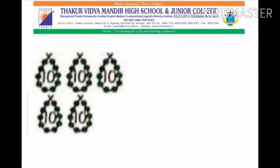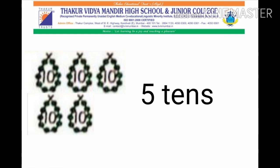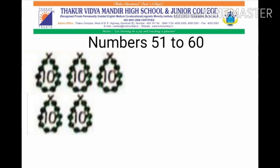These are strings of beads. Each string has 10 beads and is called 1 ten. Here we have 5 strings, that is 5 tens. Now let's start with numbers 51 to 60.